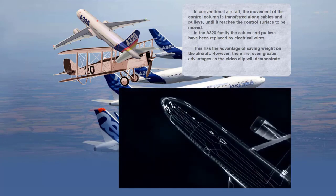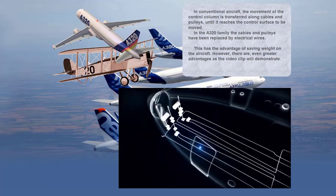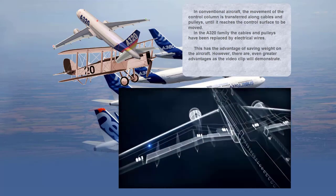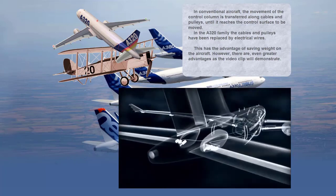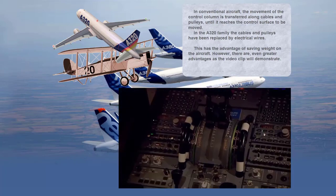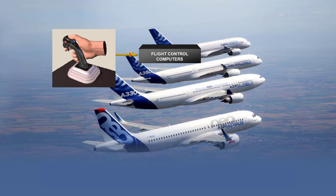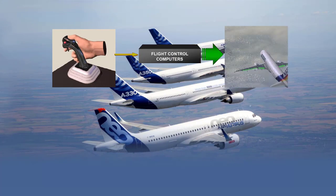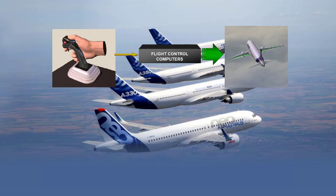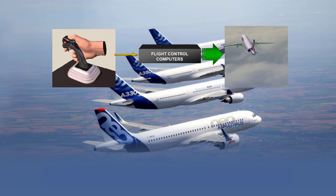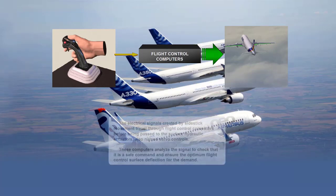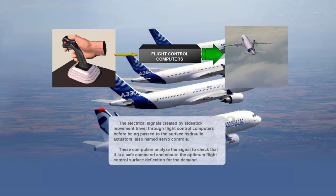The pilot tells the flight computer what he wants to do, but it is the computer that translates this intention into action and executes the maneuver. The electrical signals created by side stick movement travel through flight control computers before being passed to the surface hydraulic actuators, also named servo controls. These computers analyze the signal to check that it is a safe command and ensure the optimum flight control surface deflection for the demand.